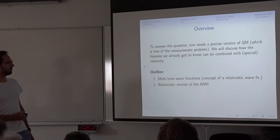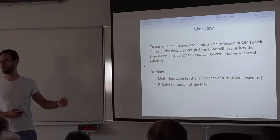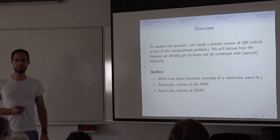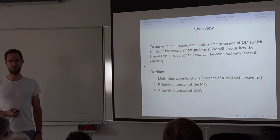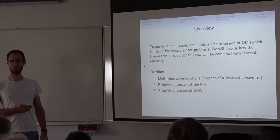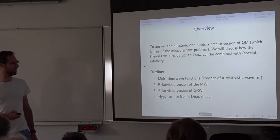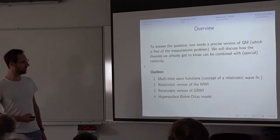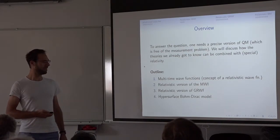Then, briefly, it's actually very difficult how to extend the Many-Worlds interpretation using such a multi-time wave function to relativity. Then, a little bit more difficult, is how to construct a relativistic version of GRW Flash — so GRW, you call it the theory of the flash ontology. That is an extension of what Rody presented, and actually due to Rody, so it's a major contribution to the foundations of relativistic quantum theory. And finally, I will speak about how Bohmian mechanics can get a relativistic version — the so-called hypersurface Bohm-Dirac model — and also compare these different theories a little bit.